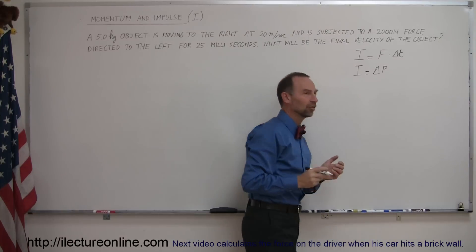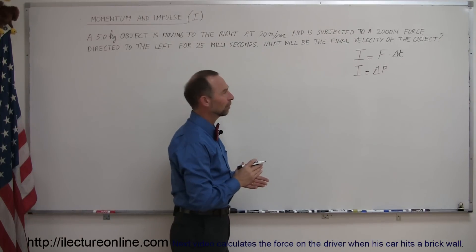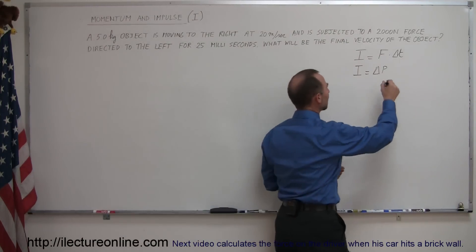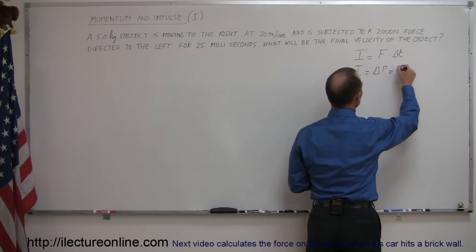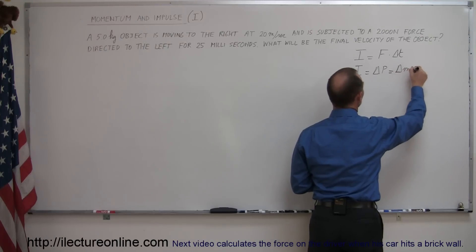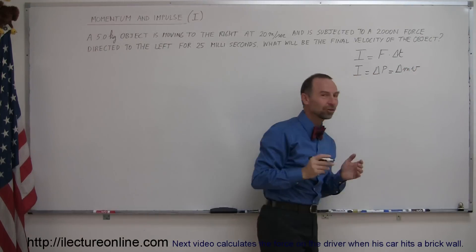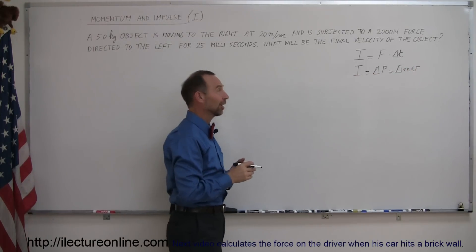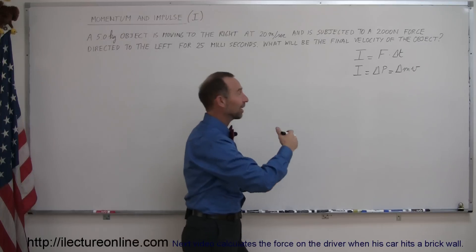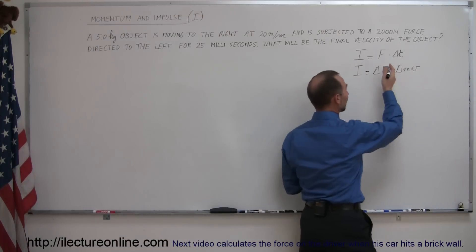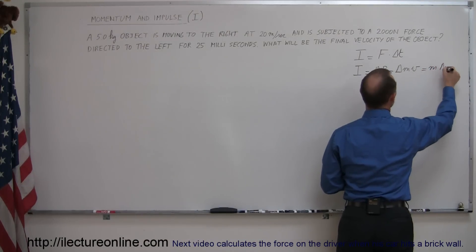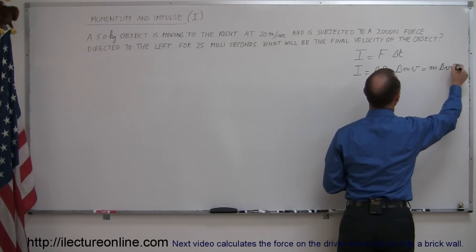Of course, since p is mass times velocity, that means impulse can be defined as a change in mass times velocity. And since usually the mass doesn't change, we can take the mass out in front of that change sign, so it's mass times a change in velocity.